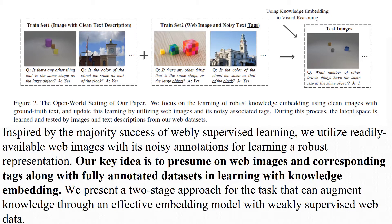Inspired by the success of webly-supervised learning, we utilize readily available web images with noisy annotations for learning a robust representation. Our key idea is to leverage web images and corresponding tags along with fully annotated datasets in learning with knowledge embedding. We present a two-stage approach for the task that can augment knowledge through an effective embedding model with weakly-supervised web data.